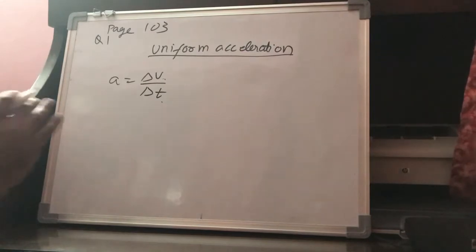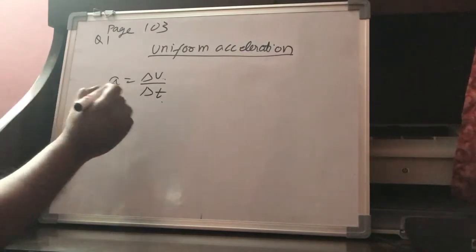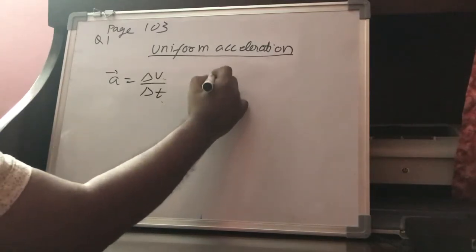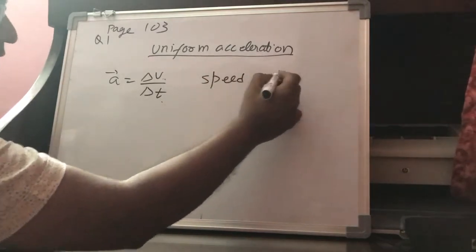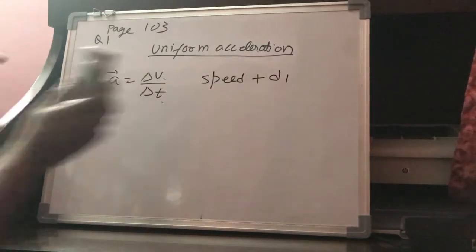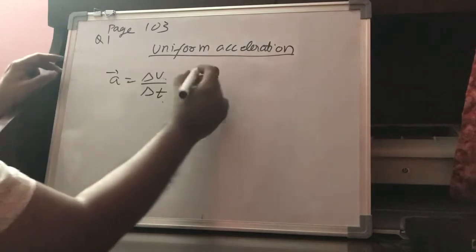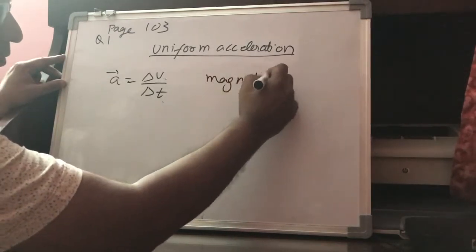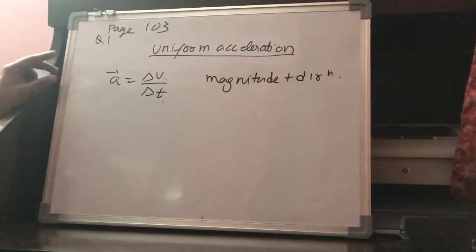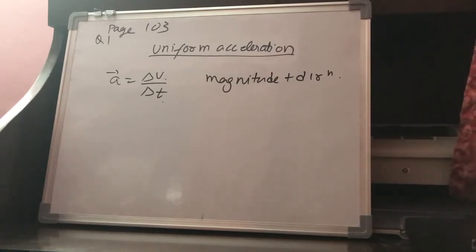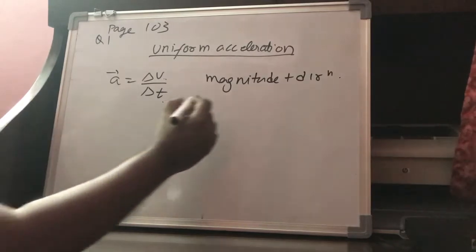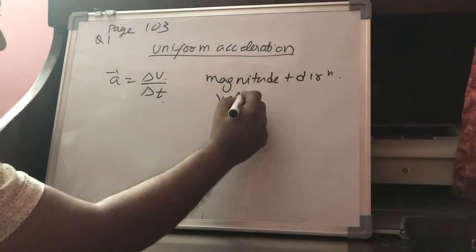One more important point: acceleration is a vector quantity. Since acceleration is a vector quantity, it has both a magnitude and a direction. So if the magnitude of acceleration and the direction of acceleration both remain the same, then the particle is said to have uniform acceleration.